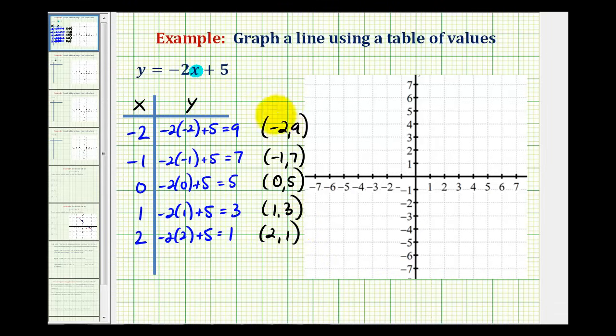So now we'll go ahead and plot these five points, and then sketch our line. So for the point negative two, nine, we'd move left two units and up nine units, which will be off the screen. It's going to be somewhere up here.